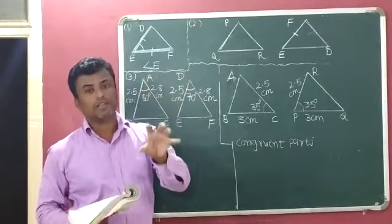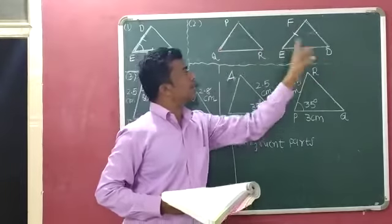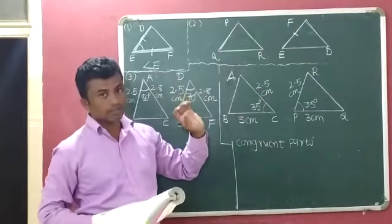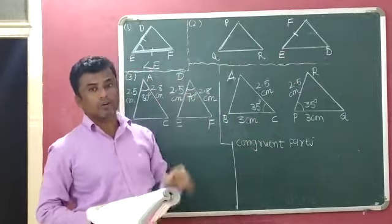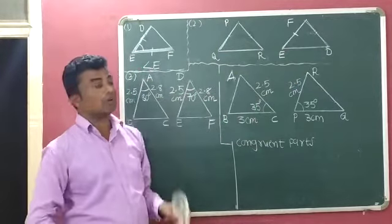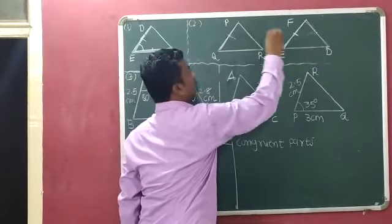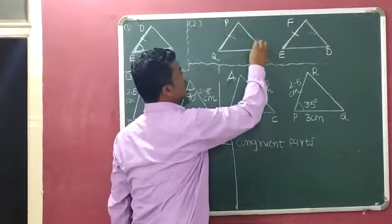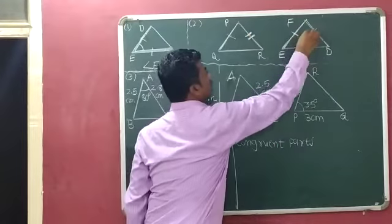We have to add one condition to establish that triangle PQR and triangle FED are congruent to each other. First, we will write whatever is given. Triangle PQR and triangle FED are already drawn here. It is given that PQ is equal to FE — this is PQ and this is FE, and they have the same length. Next, RP is equal to DF — this is RP and this is DF, and they also have the same length.